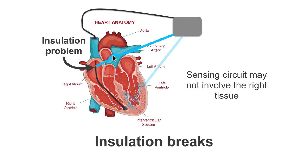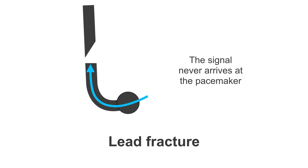In this example, it may pick up a small amount of atrial activity, which will not be detected by the pacemaker. Finally, it could be indicative of a lead fracture. Essentially, a fracture in the wire means there is no connection between the two new parts within the lead. So any electrical activity given off when the tissue depolarizes may enter the lead but can never make it back to the pacemaker.